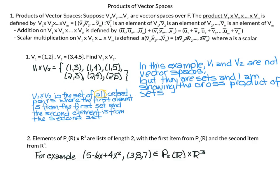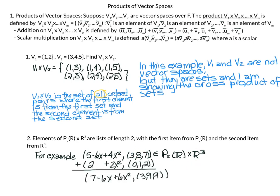For my second example, a proper product of vector spaces: elements of P2 cross R3. The elements are lists of length 2 with the first element a polynomial of degree 2 or less and the second a vector from R3. An example is the polynomial 5 minus 6x plus 4x squared paired with the R3 vector (3, 8, 7). If we have a second element — say P2 is 2 plus 2x squared and our R3 vector is (0, 1, 3) — we add component by component: polynomials to polynomials, getting 7 minus 6x plus 6x squared, and vectors to vectors, getting (3, 9, 9).